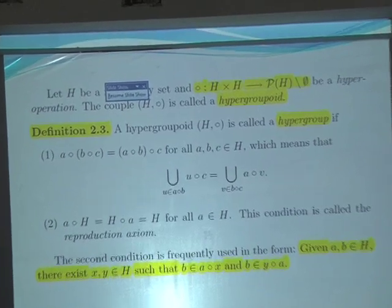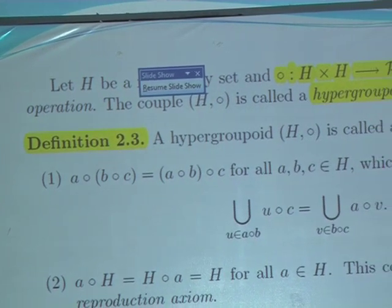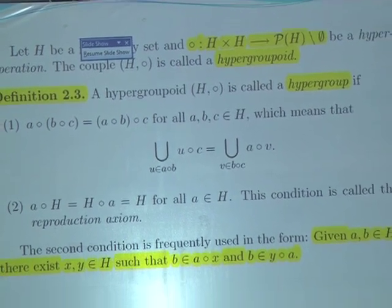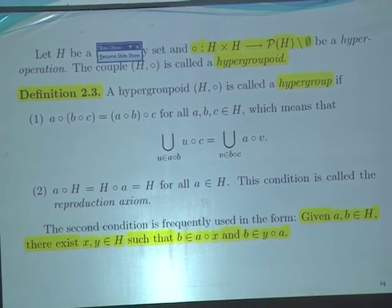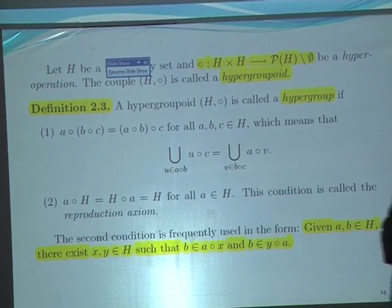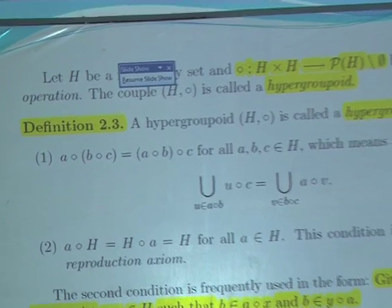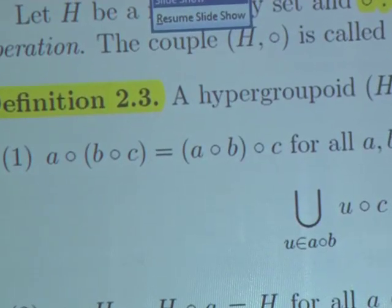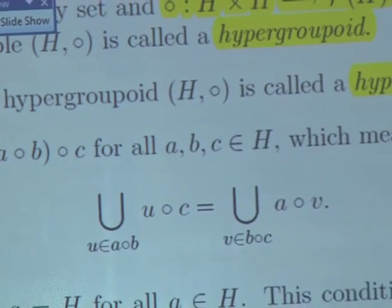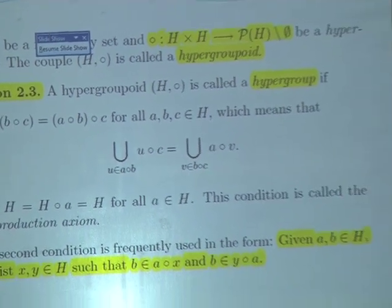Another generalization is hypergroups, where we have a hyperoperation. When we combine two elements, we obtain a set. So here we have the equality of sets. The second axiom, called the reproduction axiom, is also a generalization of the second condition in the definition of a group.